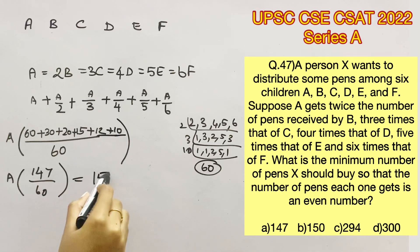Let's check with 150 now. If you now solve for A, your answer will be in a decimal value. Decimal value will not be possible in terms of pens. So we can eliminate this right away.